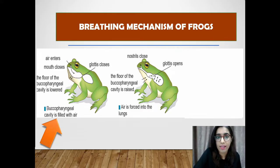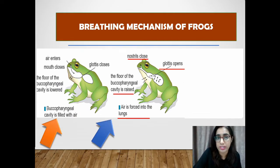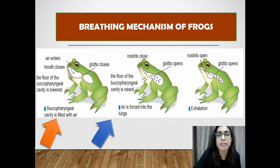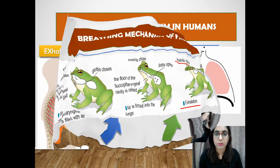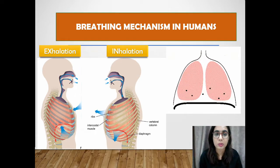To channel the air into the lungs, the glottis opens and the nostrils close, then the floor of the buccal pharyngeal cavity is raised and the increased air pressure pushes the air into the lungs. During exhalation, the lungs contract and air is expelled, aided by abdominal pressure and the elasticity of the lungs. Some air exits through the nostrils while the rest mixes with air in the buccal pharyngeal cavity.